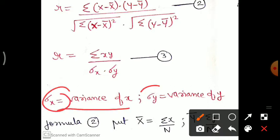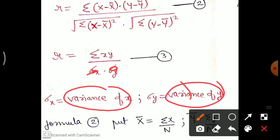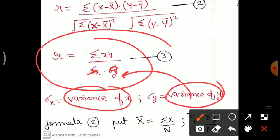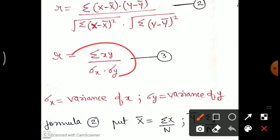Remember: sigma X is the variance of X and sigma Y is the variance of Y. This is important — if a question gives variance of X and variance of Y instead of sigma X and sigma Y explicitly, you still use this formula to find the coefficient of correlation. The coefficient of correlation itself is called Karl Pearson coefficient of correlation — don't confuse the terminology. In Karl Pearson, the step deviation method is mainly used.